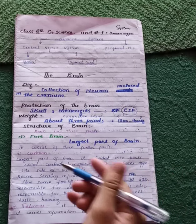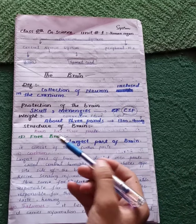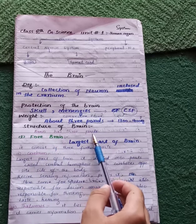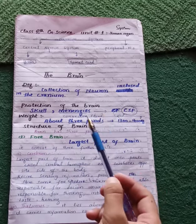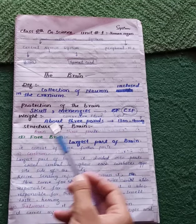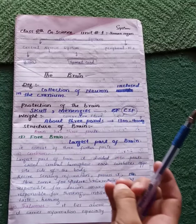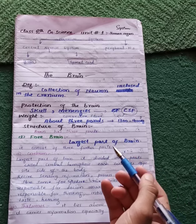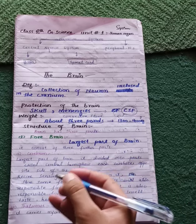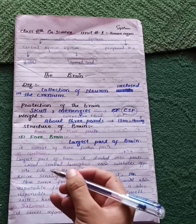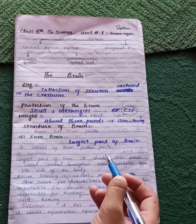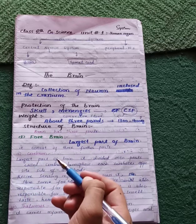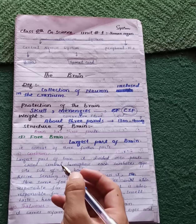Now regarding the brain structure: the brain has three parts. The biggest part is the forebrain (poor brain). The forebrain is further divided into three parts. The first part is the cerebrum — the largest part of the brain, making up the majority of the brain's volume.